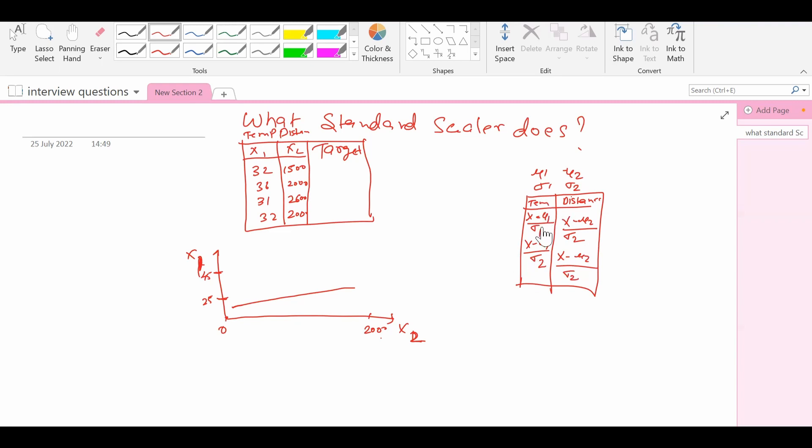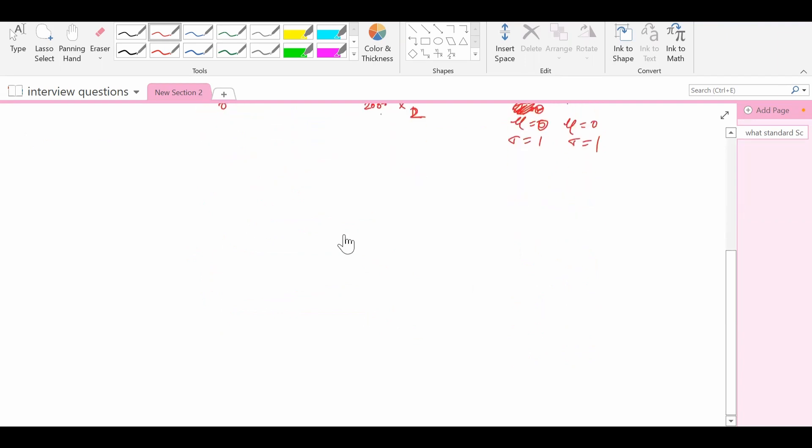Now when you do this, eventually what will happen is the mean of the respective column will become zero and the standard deviation will become one. So for this particular column also, the mean will become equal to zero and standard deviation will become equal to one.